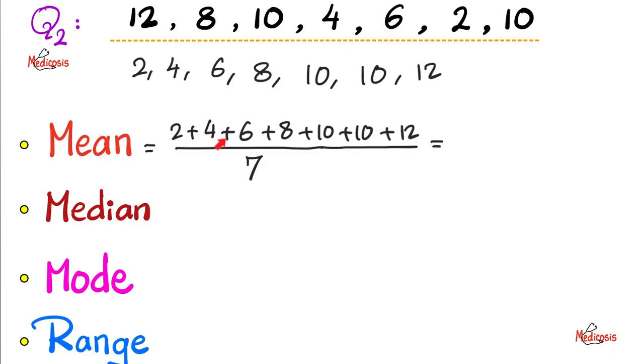And then, 6 plus 4 is 10. 2 plus 8 is another 10. So, that's 20 in total. Plus 10 plus 10. This is 40. And plus 12 is 52. 52 divided by 7 equals 7.43. And this is the arithmetic mean.